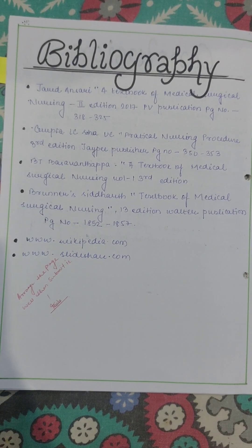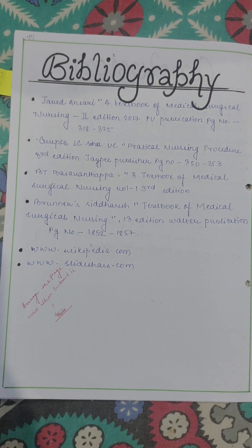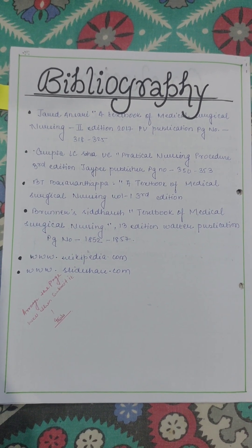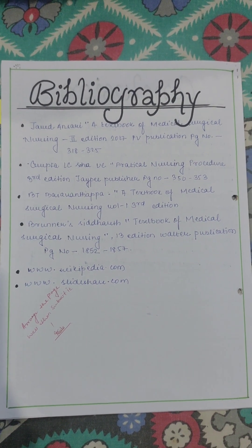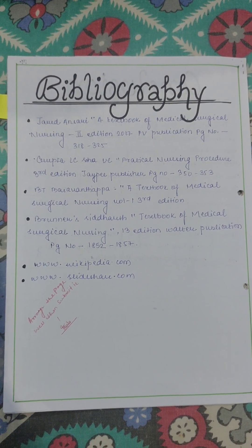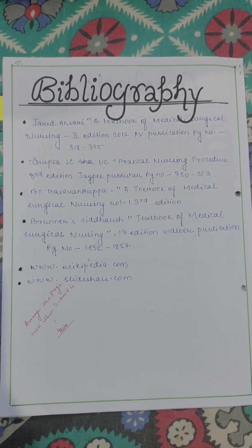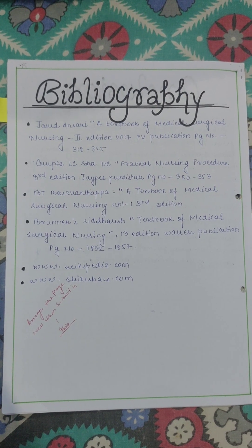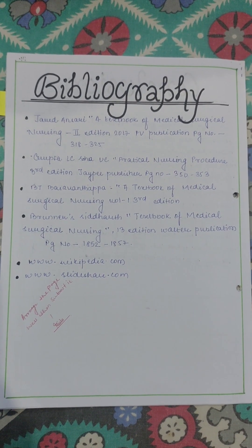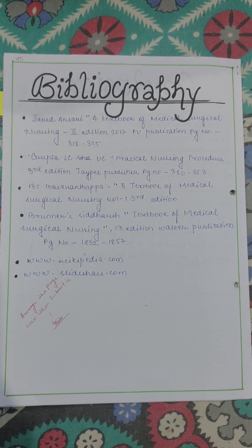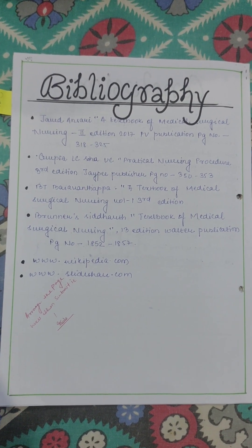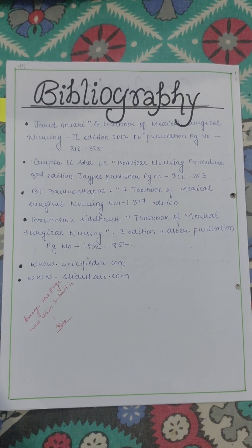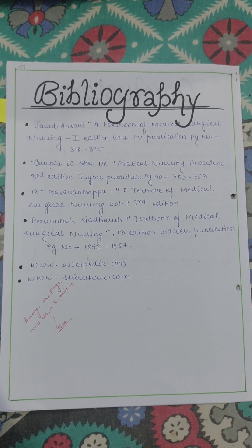Now this is the bibliography. My evaluator has written to arrange the page well and then submit it. Here I had written www.wikipedia.com, but you have to write the full link like http://...cerebrovascular accident — the whole link — because anyone who wants to check it can go to the site and gather more information. Write the full link, not just www.wikipedia.com.